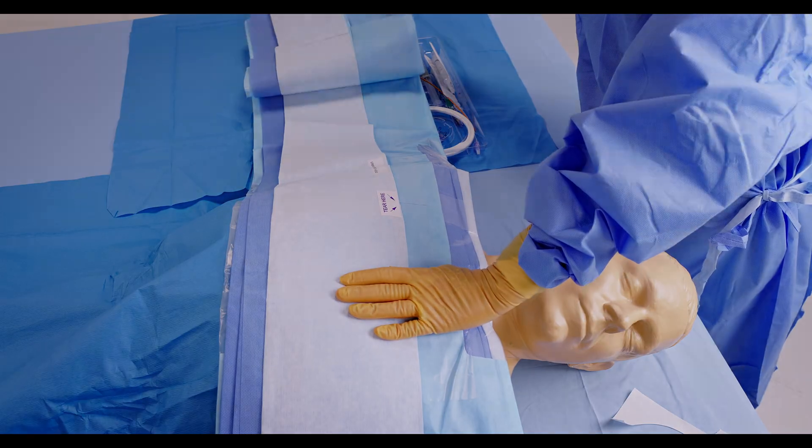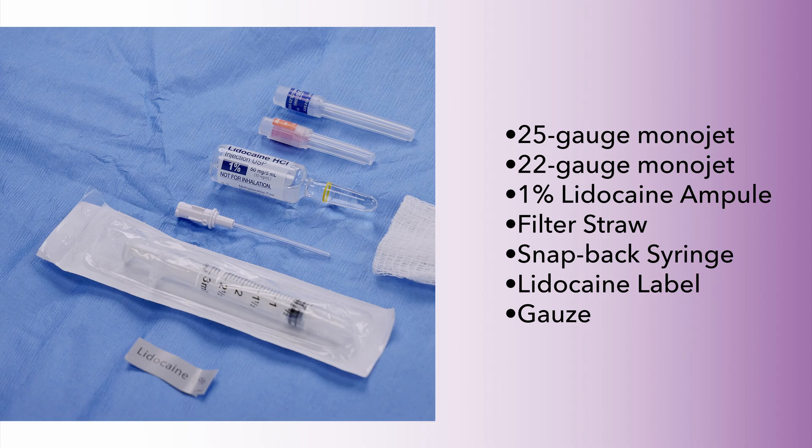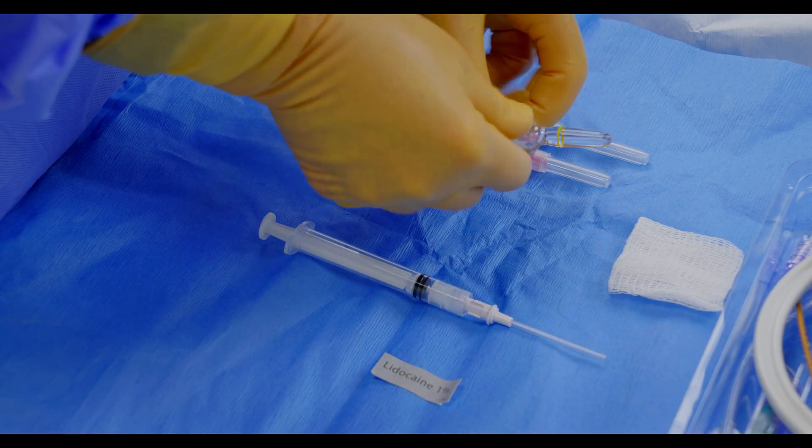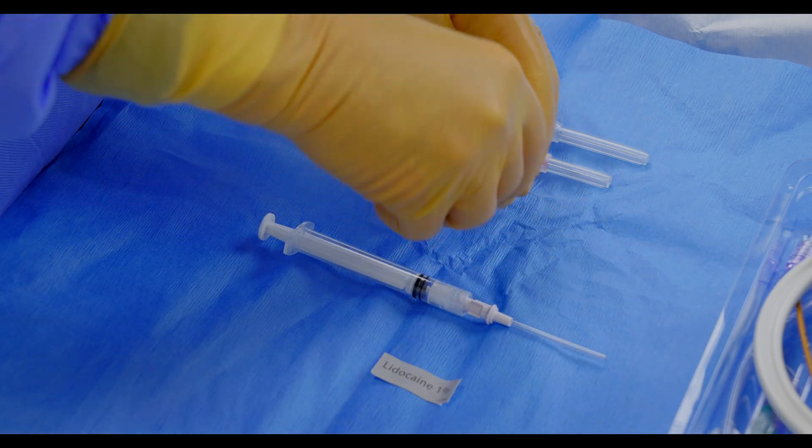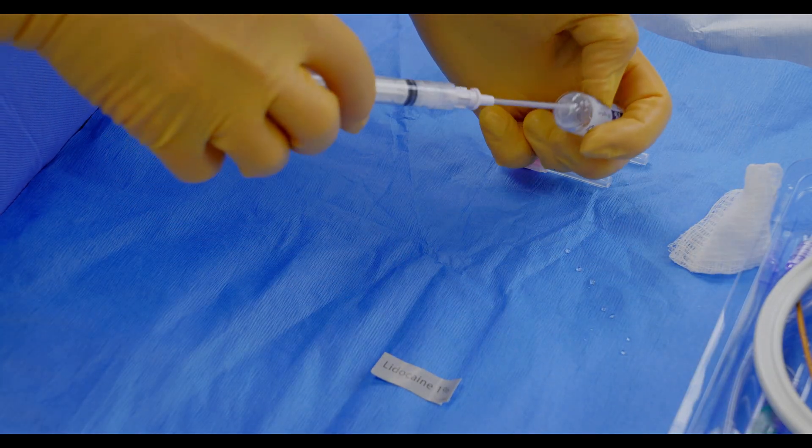To ensure patient comfort during CVC insertion, local anesthesia is administered using lidocaine. Our kit components include a 25-gauge and 22-gauge Monoject needle, a 1% lidocaine ampoule, filter straw, snap-back syringe, and a lidocaine label. Begin by attaching the filter straw to the snap-back syringe. Open the ampoule using included gauze, then draw up the appropriate volume of lidocaine, about 5 milliliters.